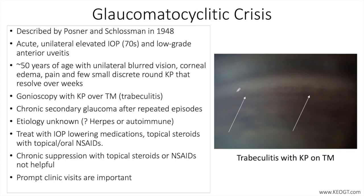Keratic precipitates can be identified over the trabecular meshwork. In this gonioscopic photo, fine keratic precipitates overlying the trabecular meshwork are indicative of a trabeculitis process. The patient may recall other similar episodes that are short-lasting and may be separated by months or years. The optic nerve remains normal early in the course of the disease, but optic nerve cupping and visual field defects arise after multiple attacks.